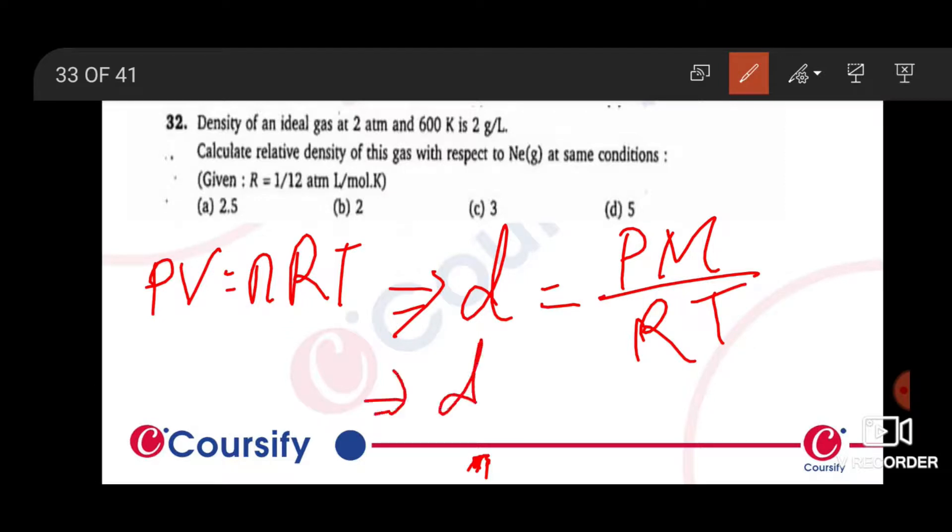If we calculate the density of neon, the density of neon is 0.8 gram per liter.